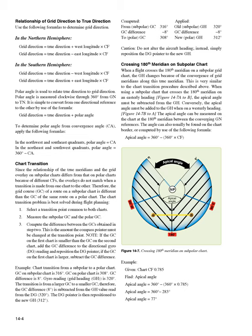Crossing the 180th meridian on a subpolar chart. When a flight crosses the 180th meridian on a subpolar grid chart, the GH changes because of the convergence of grid meridians along this true meridian. This is very similar to the chart transition procedure described above. When using a subpolar chart that crosses the 180th meridian on an easterly heading (figure 14-7a to b), the apical angle must be subtracted from the GH. Conversely, the apical angle must be added to the GH when on a westerly heading (figure 14-7b to a). The apical angle can be measured on the chart at the 180th meridian between the converging GN references.